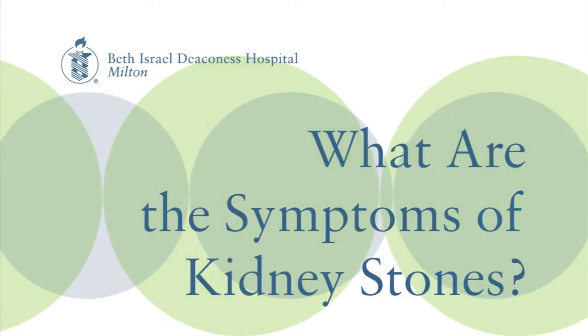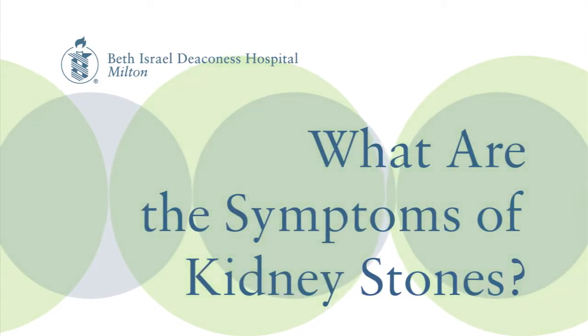The most common symptom that people will present with is flank pain, and it's usually very severe flank pain that comes out of nowhere. It then develops into what's called colicky pain, where the pain comes and goes. Initially when the stone starts to pass, the pain will start in the back, but as the kidney stone moves down near the bladder, the pain can move and start to become in the lower part of the abdomen as well, more on the front side.